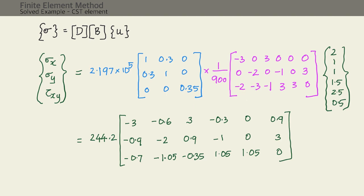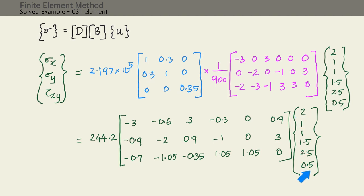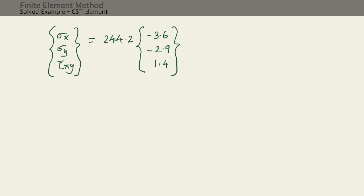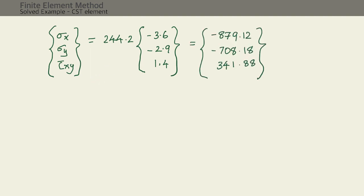We then multiply the resulting matrix by the nodal displacement vector u, producing a 3-element column vector. The first element is the dot product of the first row with u, the second element the second row with u, and the third element the third row with u. Simplifying, we obtain sigma x = −879.12, sigma y = −708.18, and tau xy = 341.88, all in N/mm² (MPa).